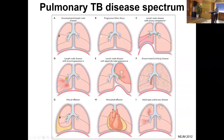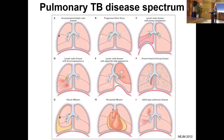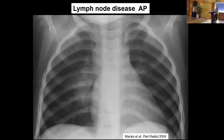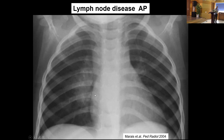As a reminder, the Ghon focus is where the organism lands in the lung, and the lymph nodes are where most of the disease happens in children. On a chest X-ray, if we see TB in a child, it most often involves the lymph nodes in the chest. On this AP X-ray, you can see a density in the hilum — it's difficult to know if that's lymph nodes, but this is often what TB in a child looks like. This is simple, uncomplicated disease.